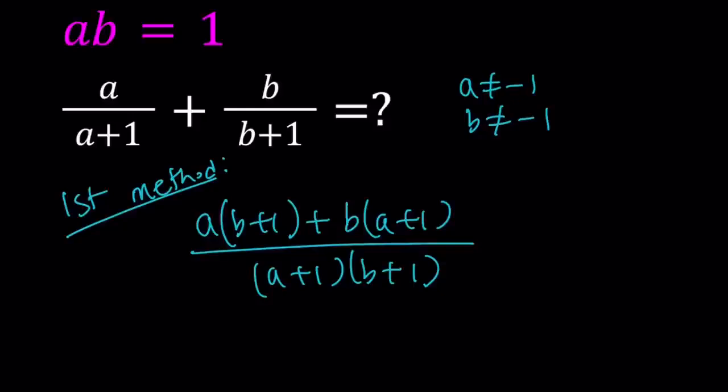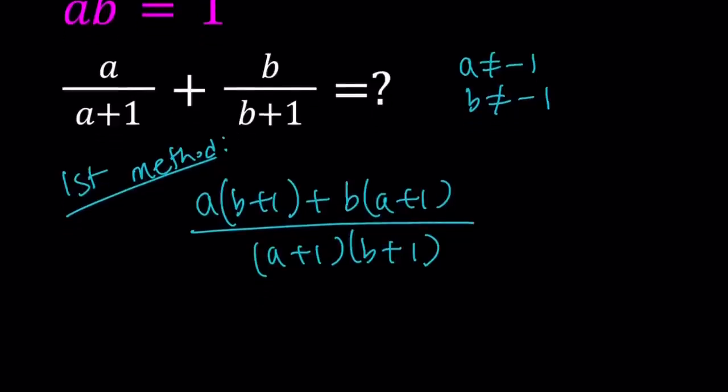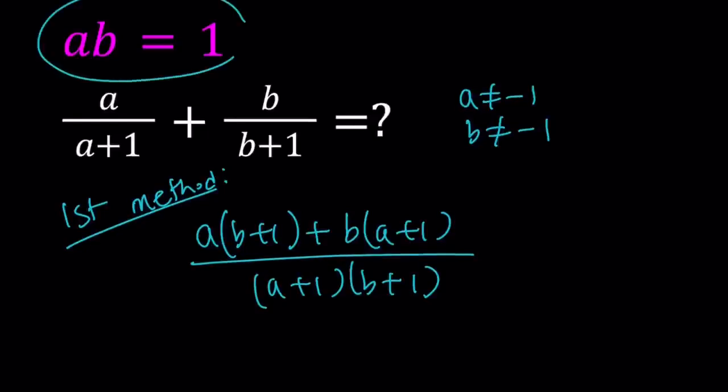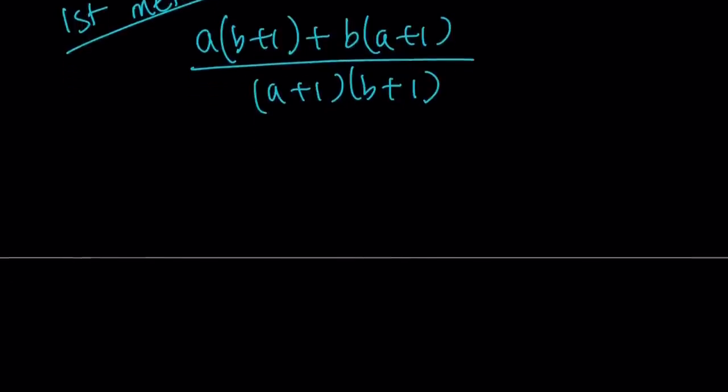So you can get ab equals 1 from negative 1 and negative 1, but in our case, it's not possible. Okay, let's go ahead and simplify this. Again, always keep in mind that ab equals 1. That's going to be helpful along the way.